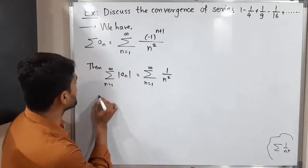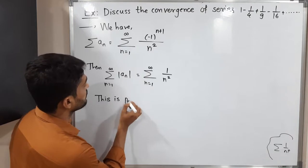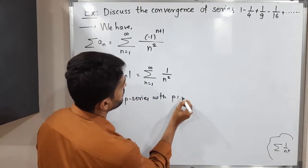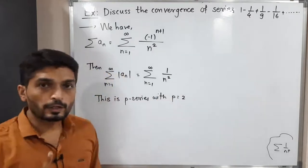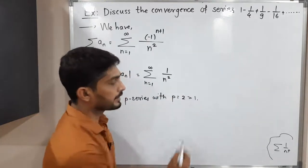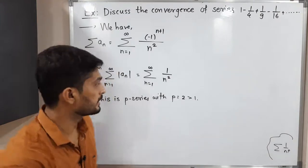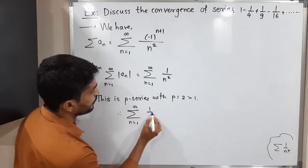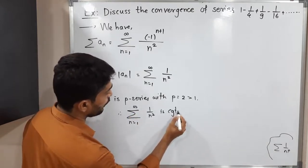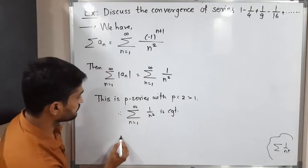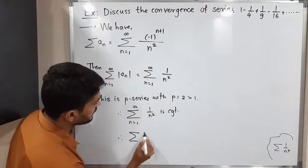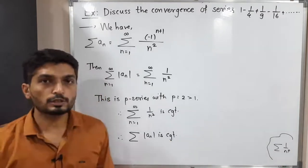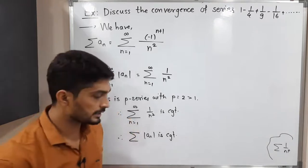A series in the form summation 1 upon n raise to p is called a p-series, and we have got one of it. So let me mention: this is a p-series with p equal to 2. We have already proved one result — when you have a p-series with p greater than 1, it is a convergent series. Therefore, summation n running from 1 to infinity of 1 upon n square is a convergent series. It means summation mod n is convergent.